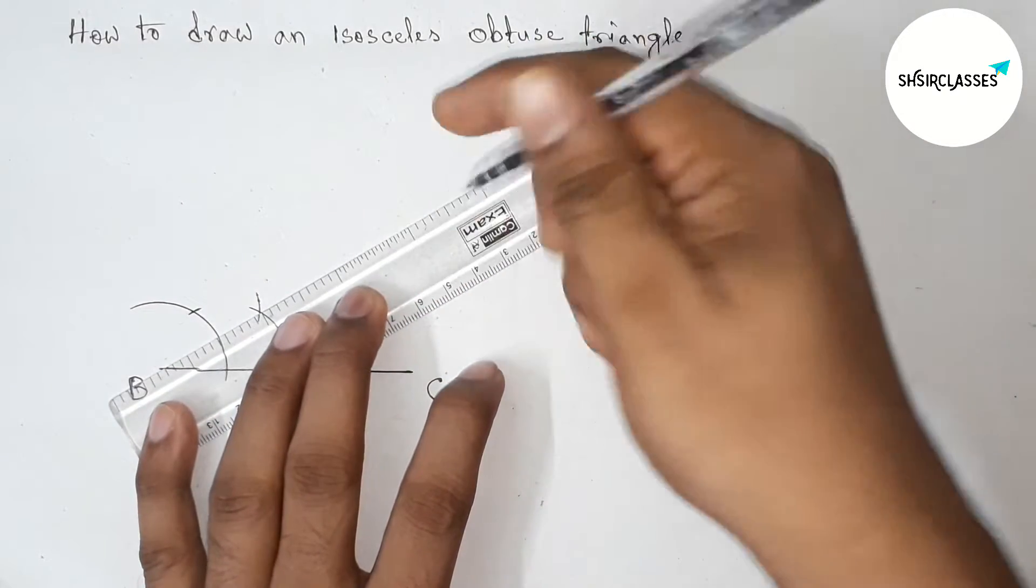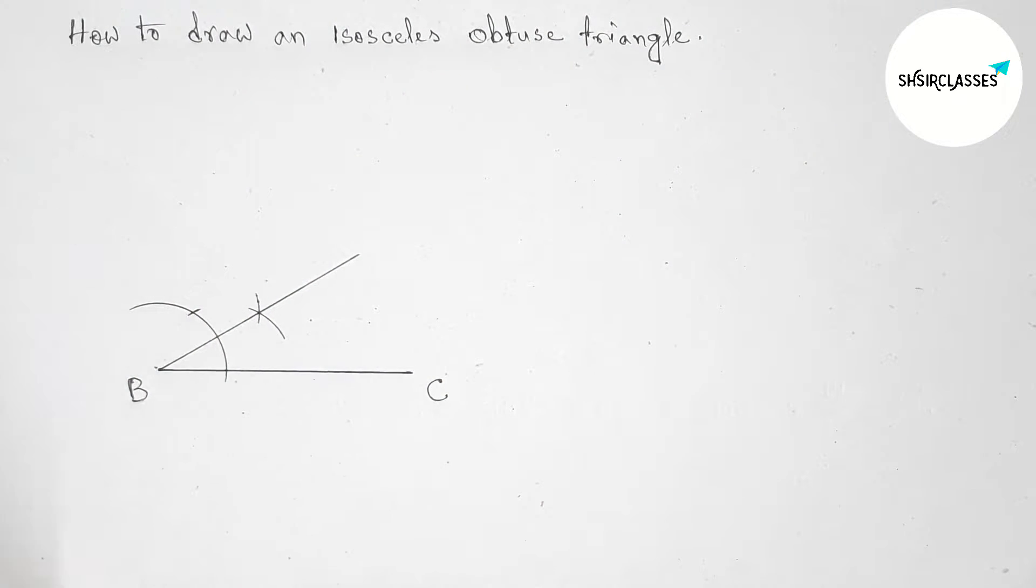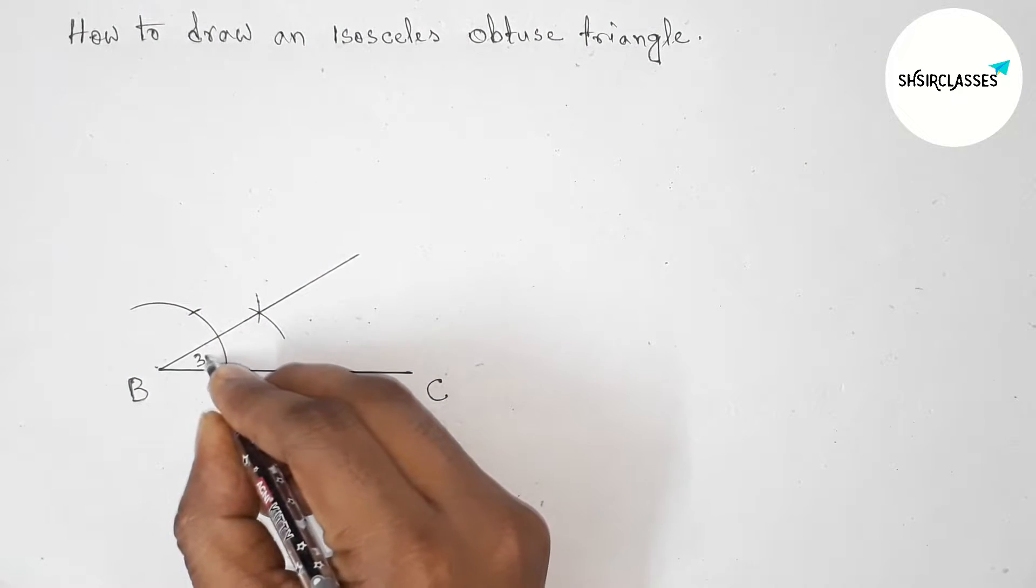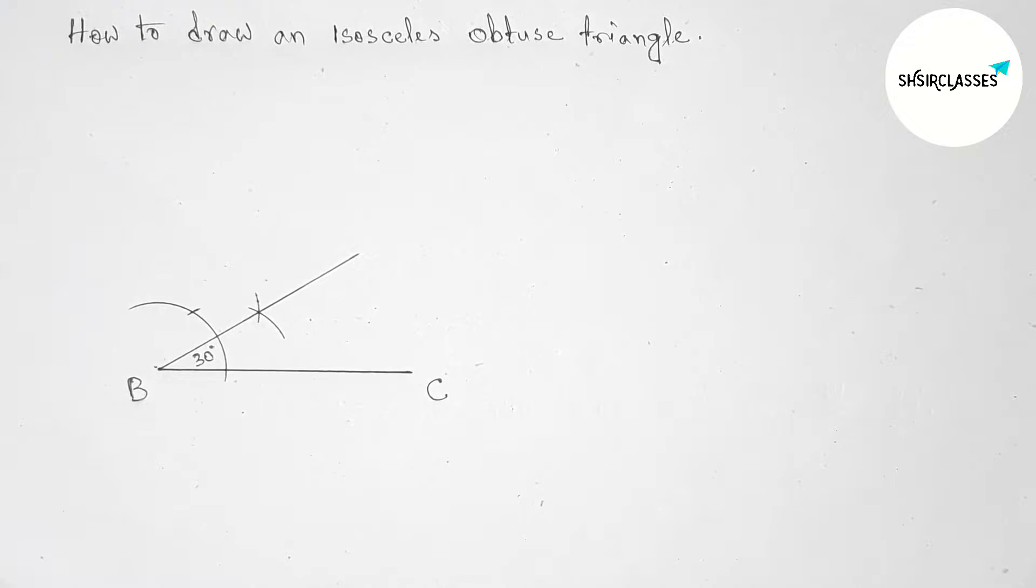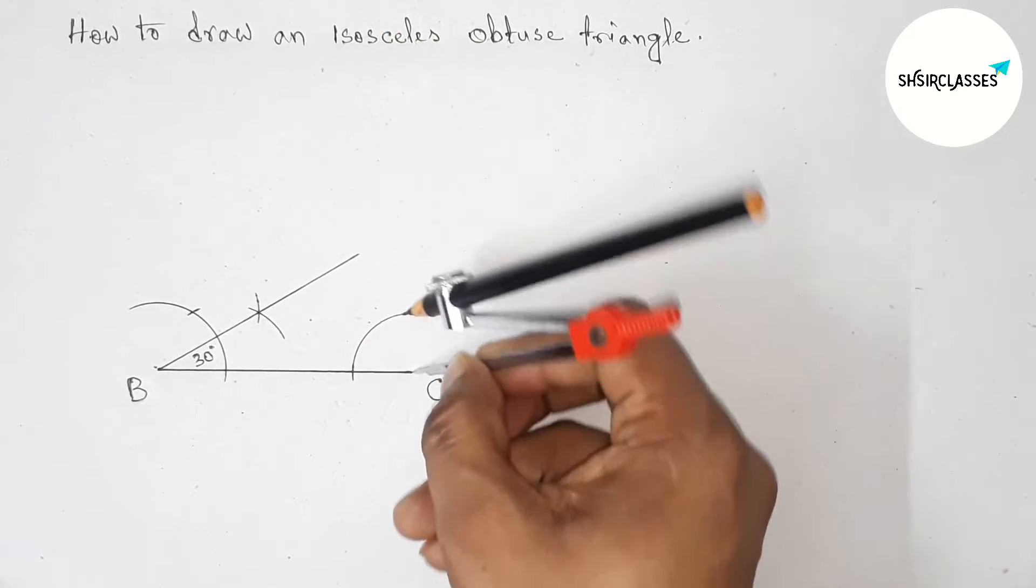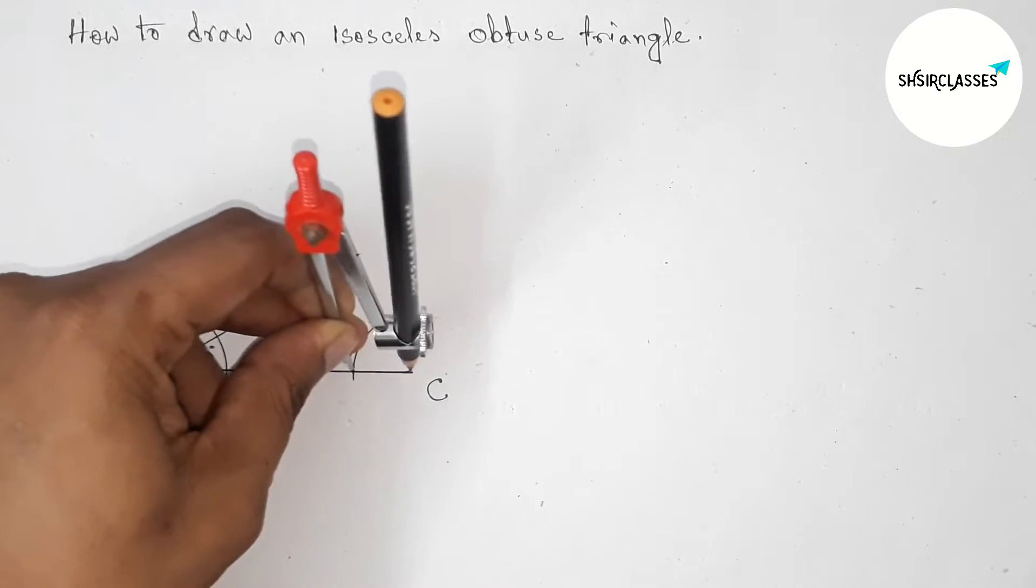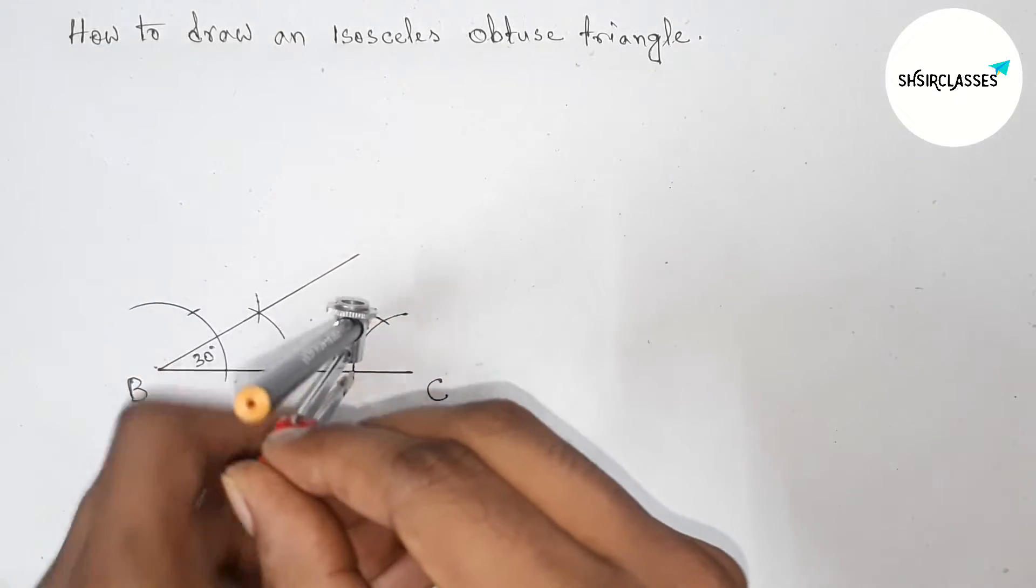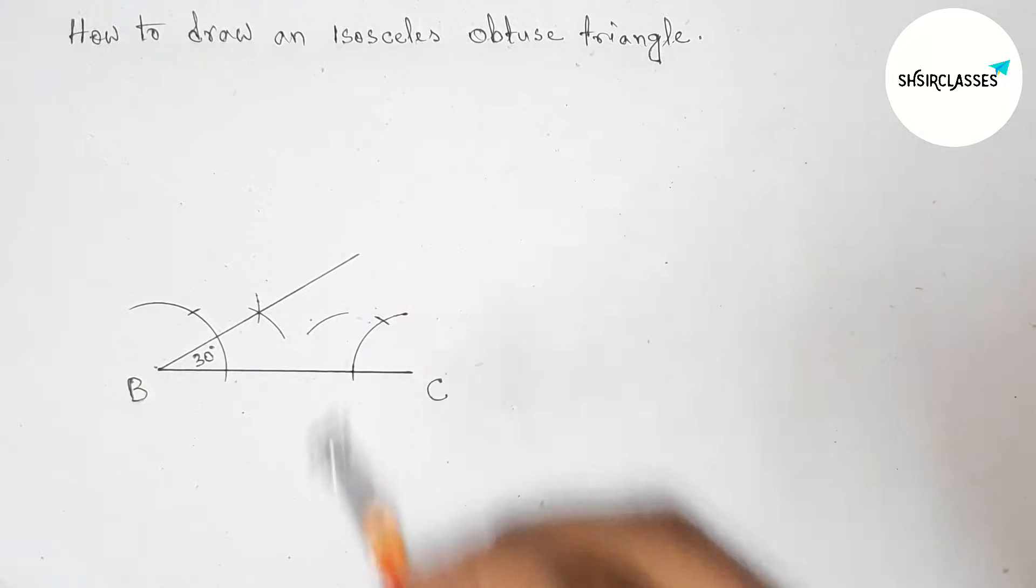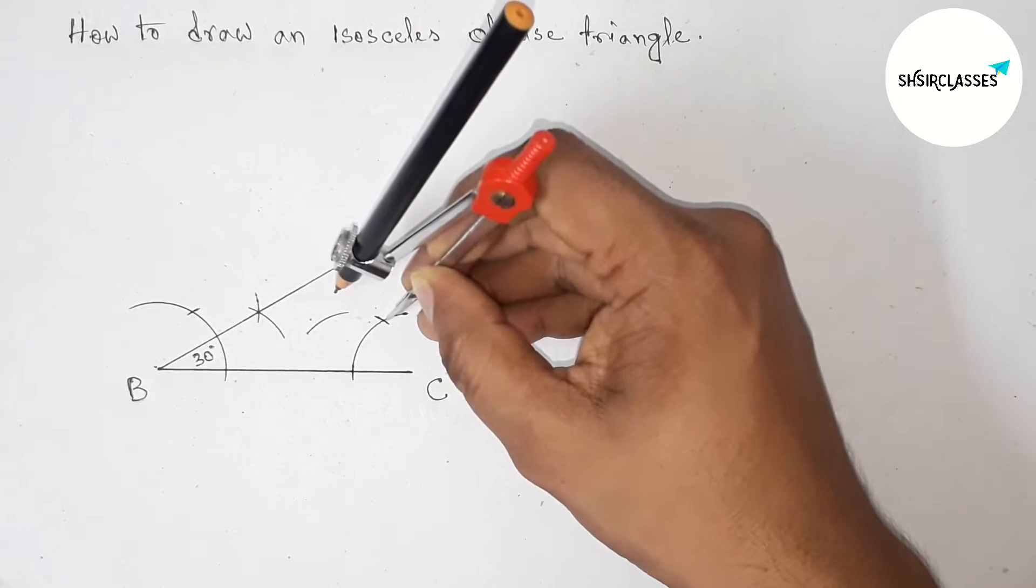I am drawing 30 degree angle first. So similarly drawing 30 degree angle on the point C. Putting the compass on the point C and taking any length and drawing arc by this way. Now putting the compass here with same length and cut here, and drawing arc here again with same length and putting the compass here and cut here.